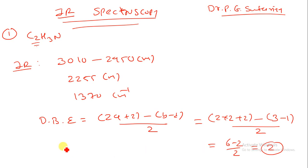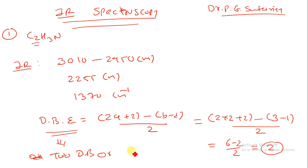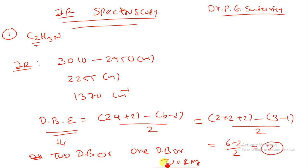If we are having a DBE value of 2, we can say the compound should have at least 2 double bonds, or 1 double bond and 1 ring, or 2 rings present in the structure.